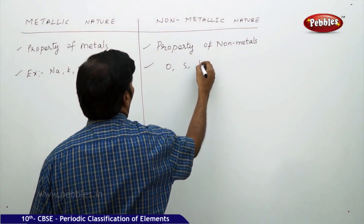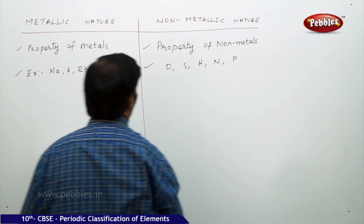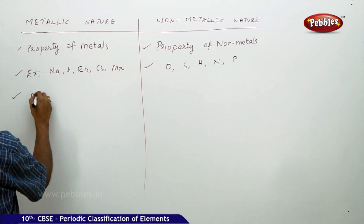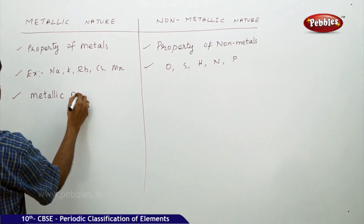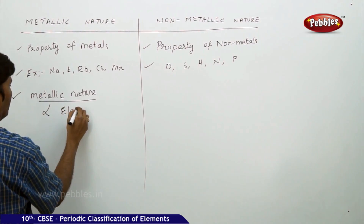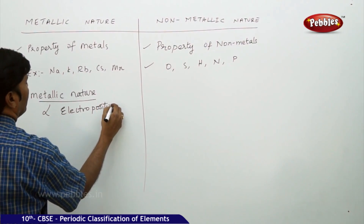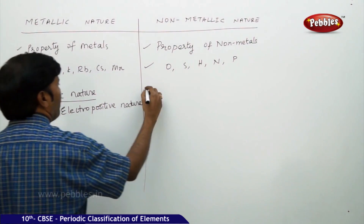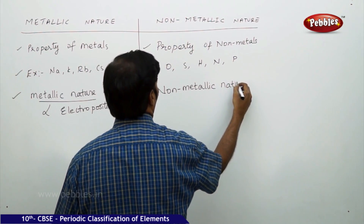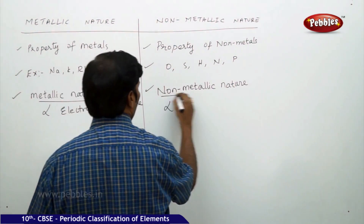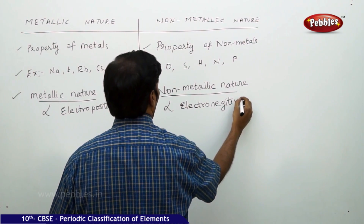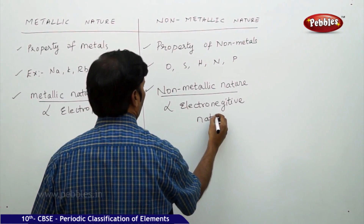Non-metals include oxygen, sulfur, hydrogen, nitrogen, phosphorus — all these are non-metals. Metallic nature is directly proportional to the electropositive character of elements. Non-metallic nature of elements is directly proportional to the electronegative nature of elements.